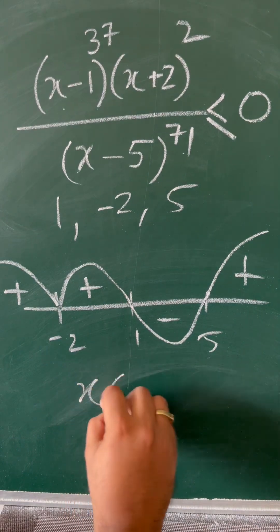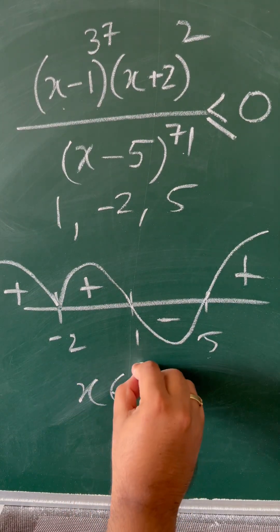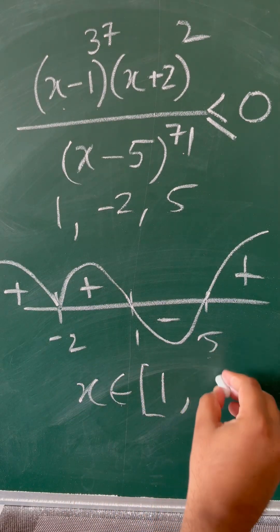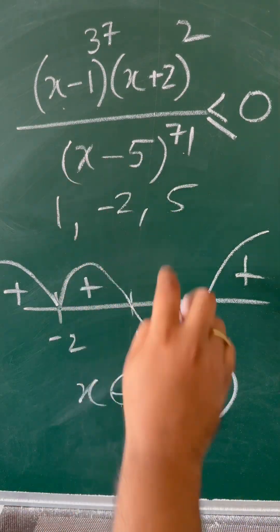So x belongs to... it can take 1, right? It can take 1. But can it take 5? No, it cannot take 5 because x is not equal to 5 since it's in the denominator.